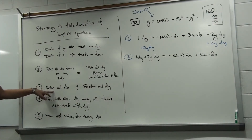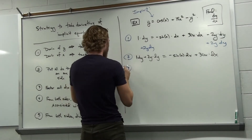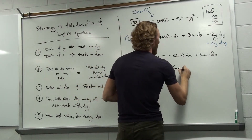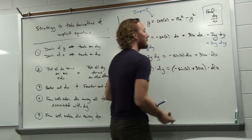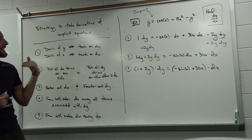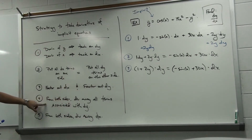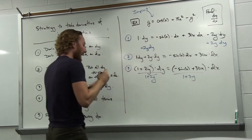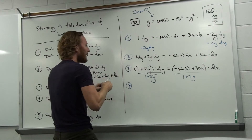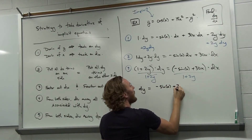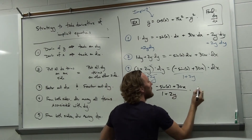Next, let's factor out our dx's and our dy's. We can factor out our dy's to get 1 plus 2y times dy. And on the other side, we have minus sine x plus 30x times dx. Now we're getting closer to having dy over dx. In order to get dy over dx, we need to get dy by itself, so the next step is to divide away everything associated with dy from both sides — divide away 1 plus 2y from both sides. That cancels on the left-hand side, leaving just dy. On the other side, we've got minus sine x plus 30x over 1 plus 2y times our dx.